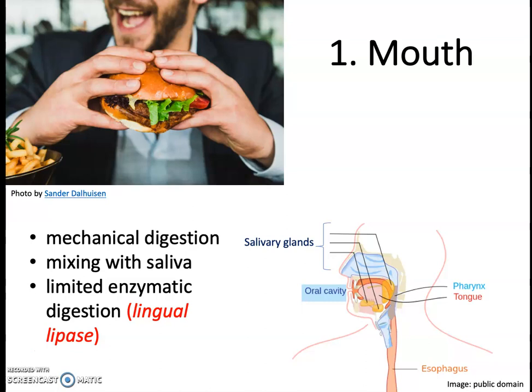An enzyme called lingual lipase is produced by cells on the tongue. That word lingual means relating to the tongue, and that enzyme starts to break down triglycerides by cleaving individual fatty acids from the glycerol backbone. You'll see several more lipase enzymes that contribute to lipid digestion as we work our way through the digestive tract, and whenever you see the word lipase, you know we're talking about an enzyme that digests lipids.